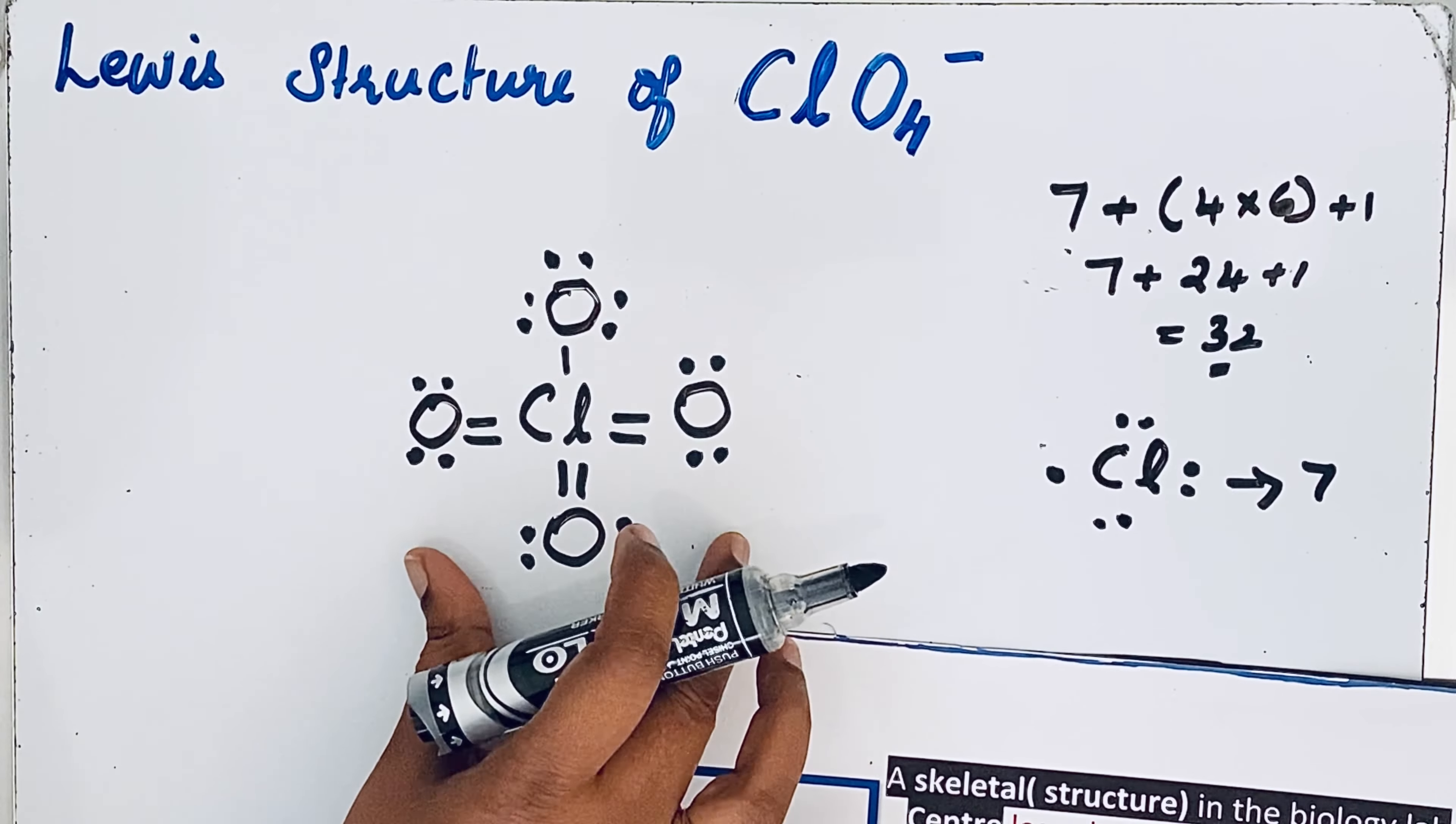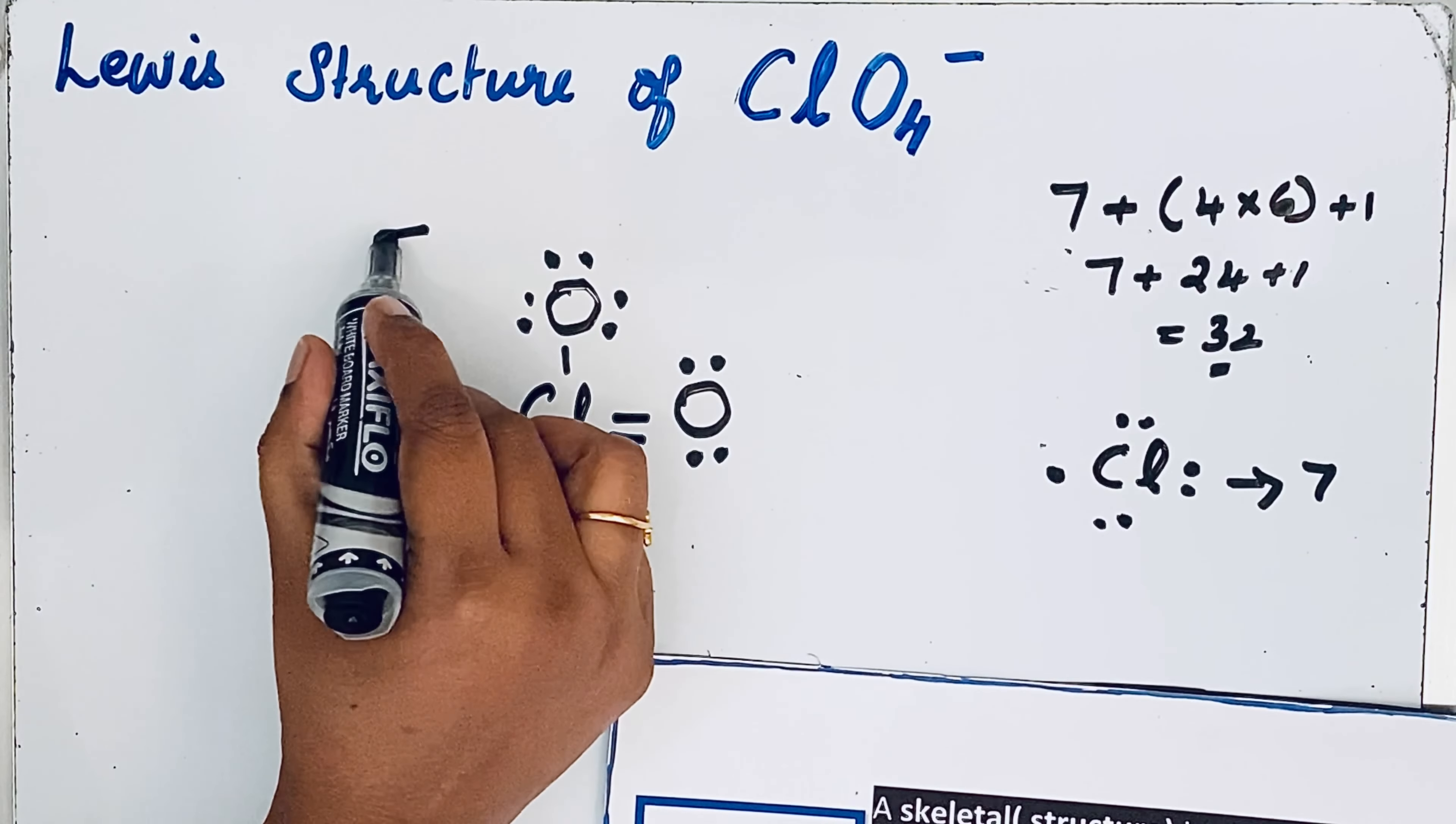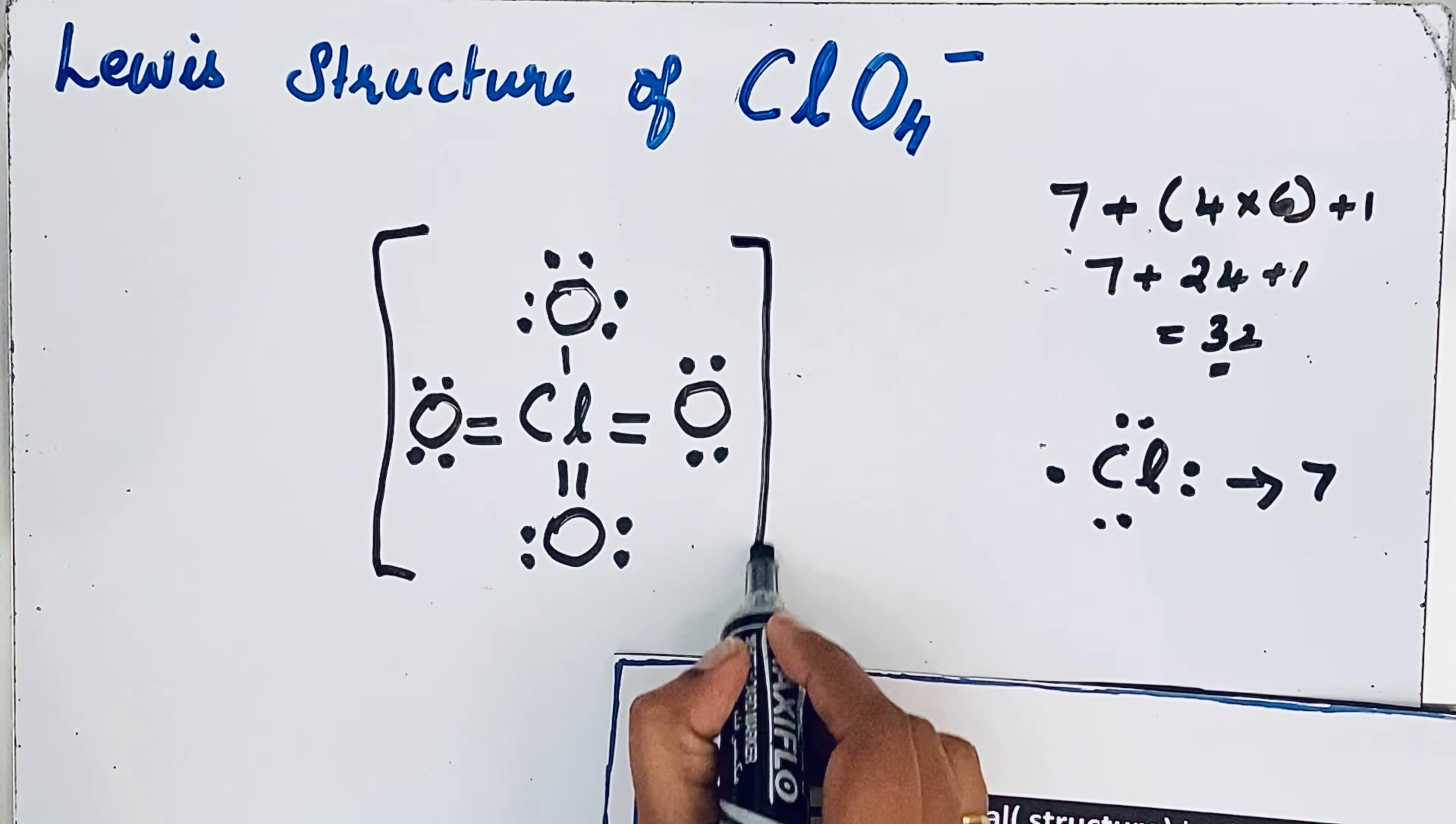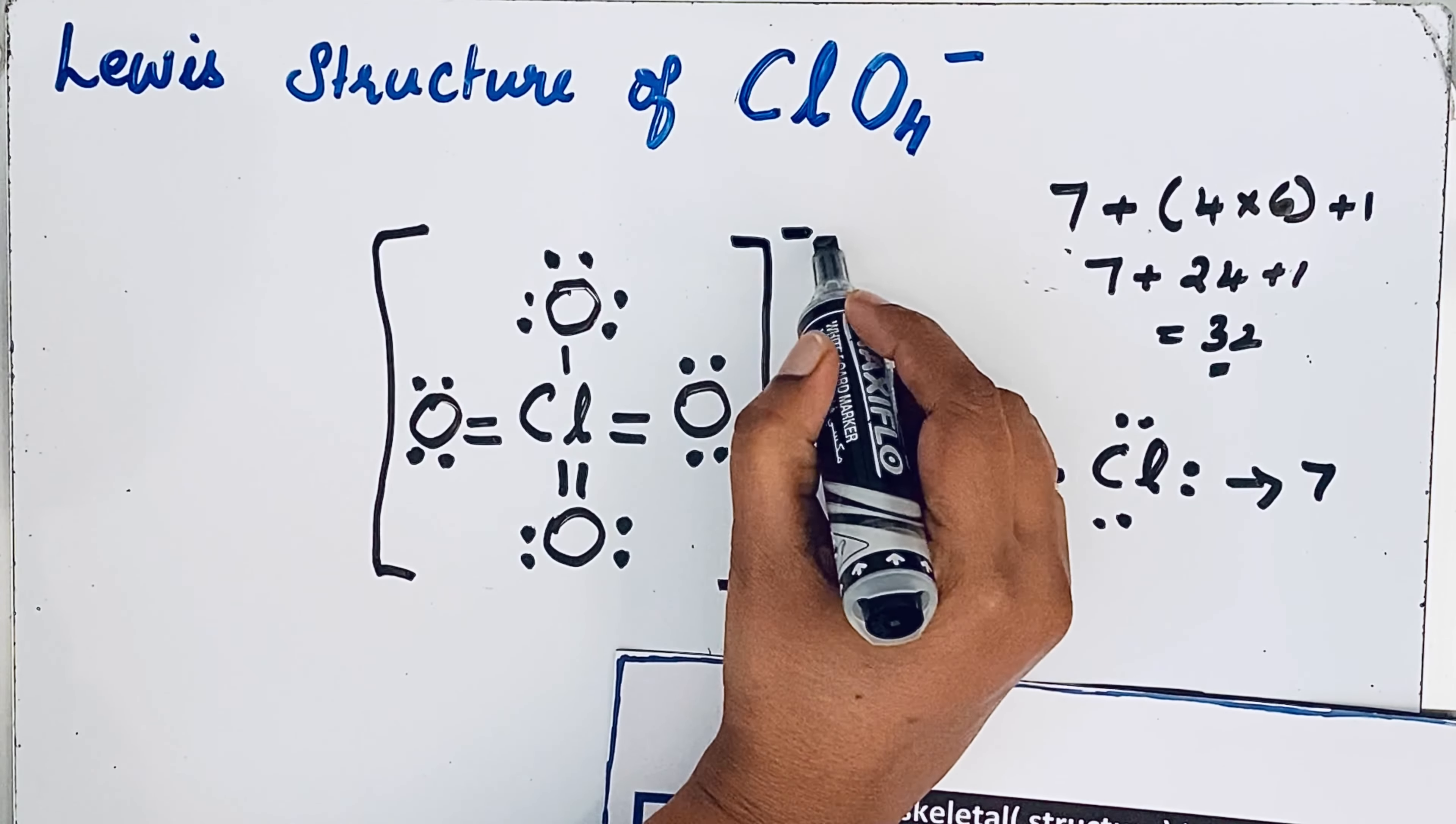So this is the exact Lewis structure of ClO4- ion. Since it is a polyatomic ion, we're going to enclose this Lewis structure inside the bracket and that charge minus one is there. So we write it on the right hand side.